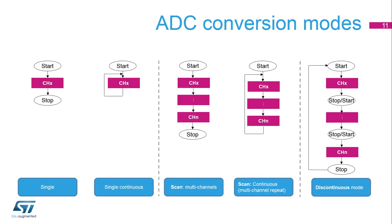The AD converter supports several conversion modes. Single mode converts only one channel in single shot or continuous mode. Scan mode converts a complete set of predefined program input channels in single shot or continuous mode. Discontinuous mode converts only a single channel at each trigger signal from the list of predefined program input channels.